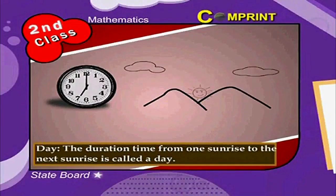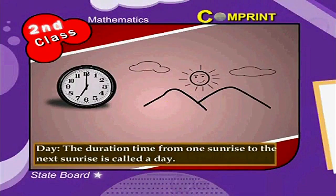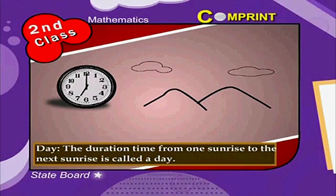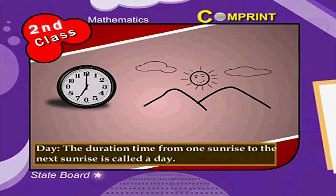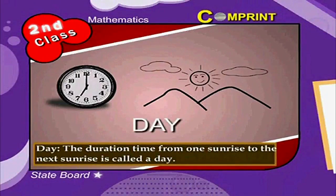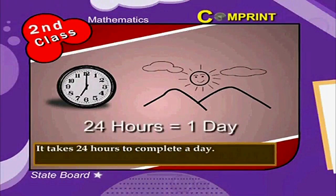Day: The duration of time from one sunrise to the next sunrise is called a day. It takes 24 hours to complete a day.